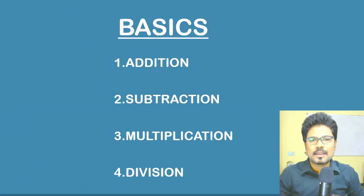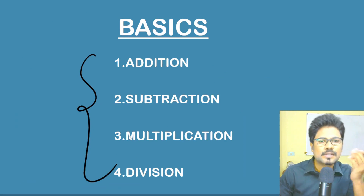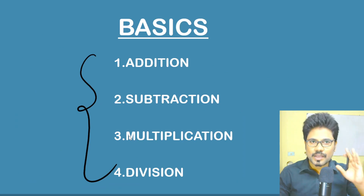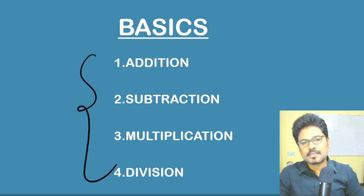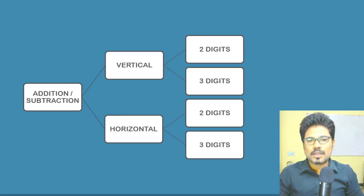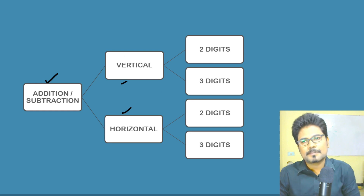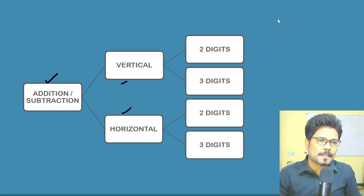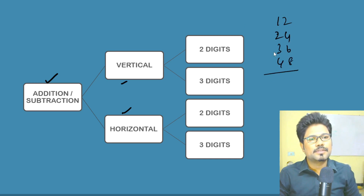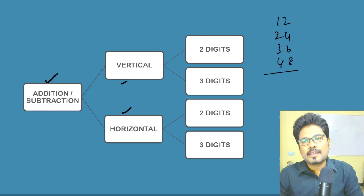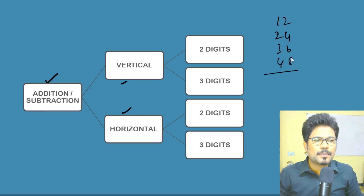What are those basics? We will start with addition. Addition and subtraction — vertical addition and horizontal addition — two digits and three digits. For example, suppose we need to add 12, 24, 36, and 48. How can you add? 8 plus 6 is 14 — no. It is 8 plus 2, which is 10; 10 plus 10 is 20.